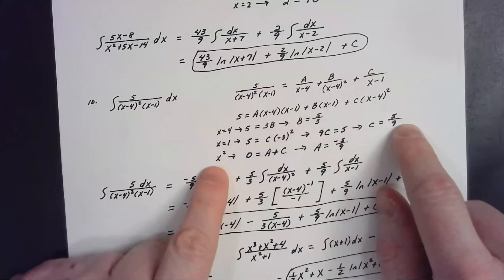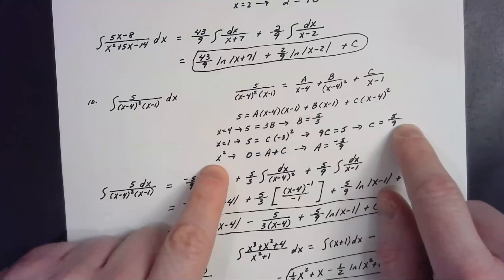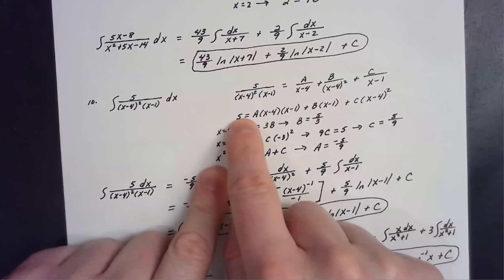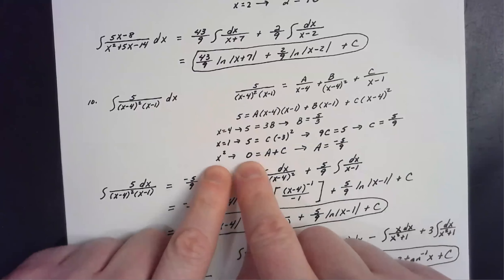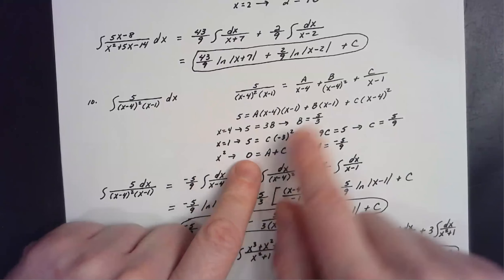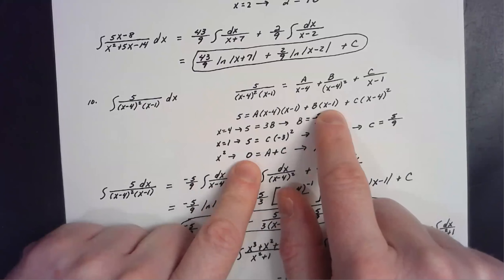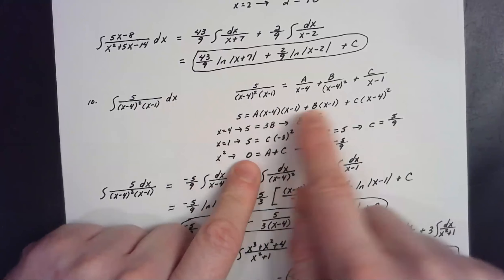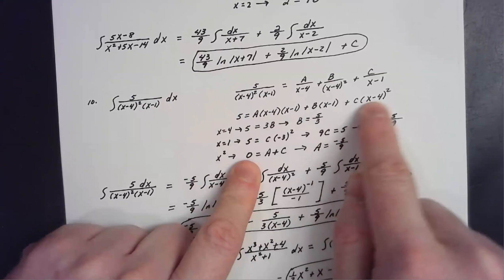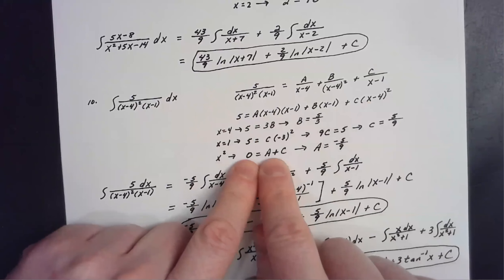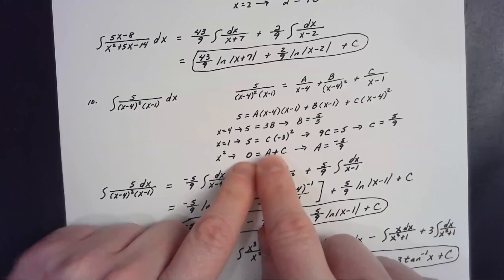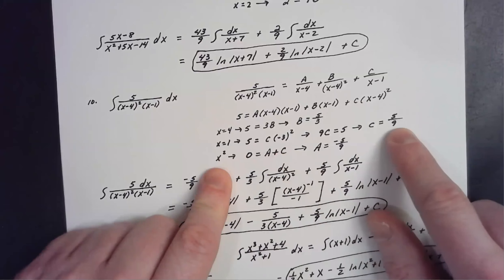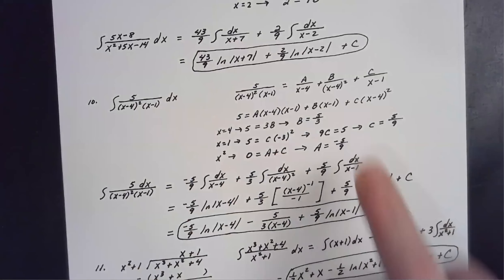To find A, I look at the coefficients of the x squared terms. On the left side there's no x squared term, so its coefficient is zero. On the right, A and C both contribute x squared coefficients, giving A + C = 0. Since C = 5/9, we get A = −5/9.